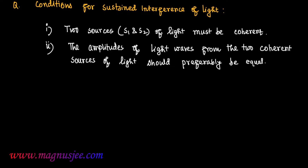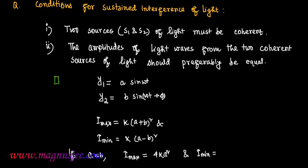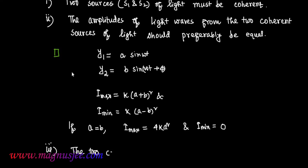Number three condition: if the equation of the first light wave is Y1 = A sin(ωt), and the equation of the second interfering light wave is Y2 = B sin(ωt + φ), then the intensity of bright fringes Imax = K(A + B)² and intensity of dark fringes Imin = K(A − B)². If A equals B, then Imax = 4KA² and Imin = 0. That means the amplitudes of two light waves from the two coherent sources should be preferably equal.